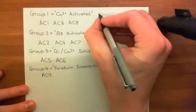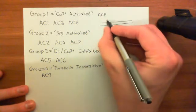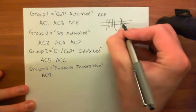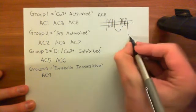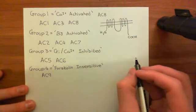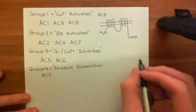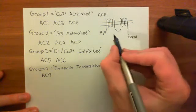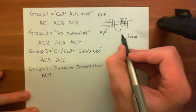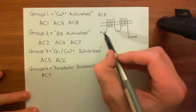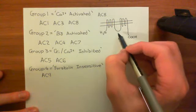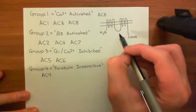Let's start with adenylyl cyclase 8. Here is transmembrane domain 1, the C1 domain, transmembrane domain 2, the C-terminal tail, with the carboxylic acid at the end and the amino-terminus up here. When calcium goes up, it activates adenylyl cyclase 8. However, adenylyl cyclase 8 doesn't have a direct binding site for calcium. Instead, it binds to the protein calmodulin, and calmodulin has the binding site for calcium.